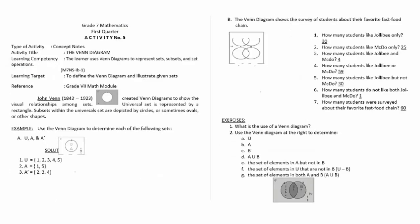Activity number five is the Venn diagram — there is a short history and explanation of what a Venn diagram is, followed by exercises. Activity number six covers set operations using the Venn diagram.